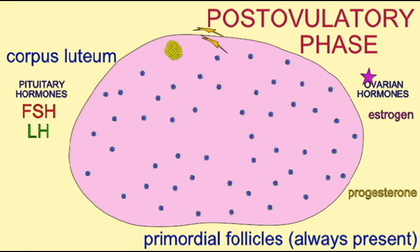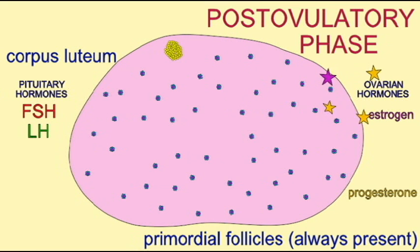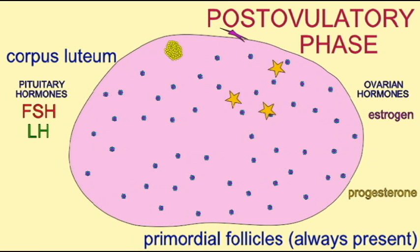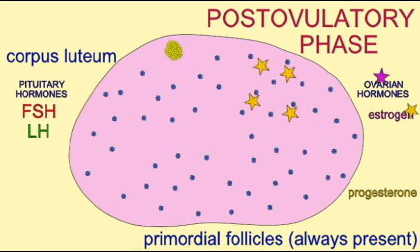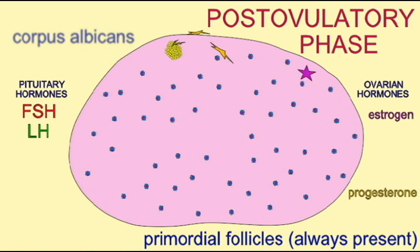If conception does not occur, the corpus luteum will break down into the corpus albicans, and the levels of progesterone and estrogens will drop. This will then cause the hypothalamus to make GnRH, and the pituitary to make FSH, and a new menstrual cycle will begin.